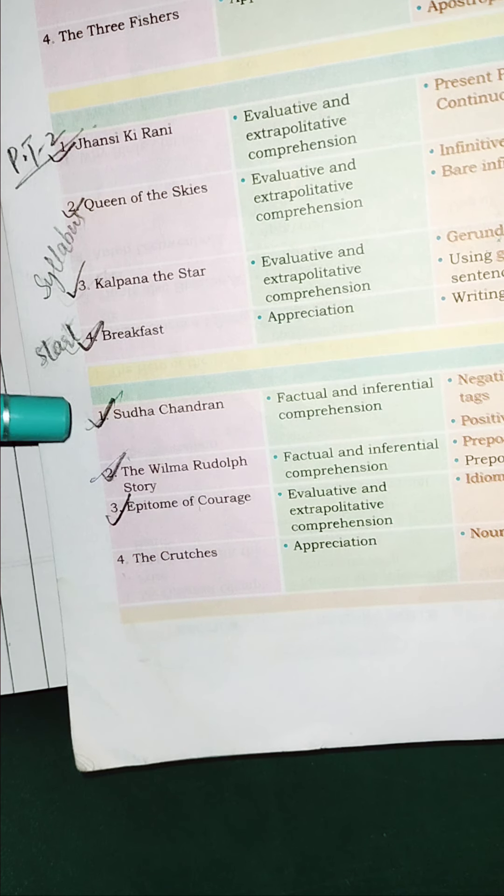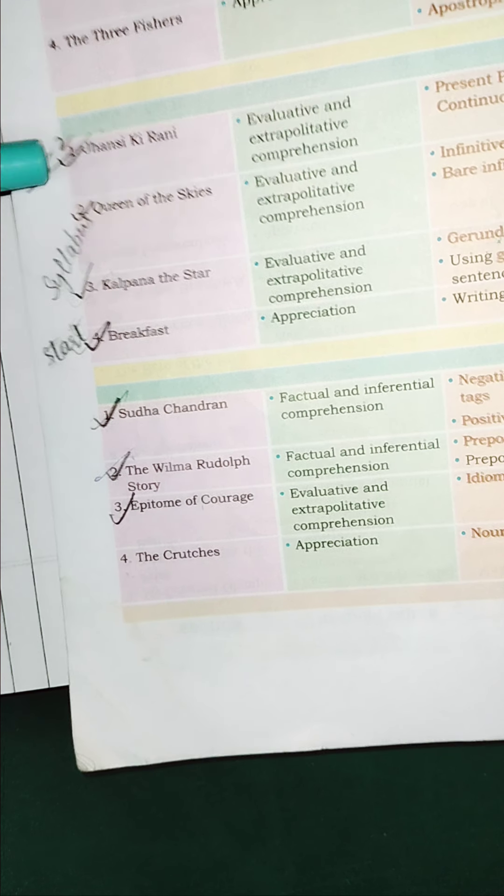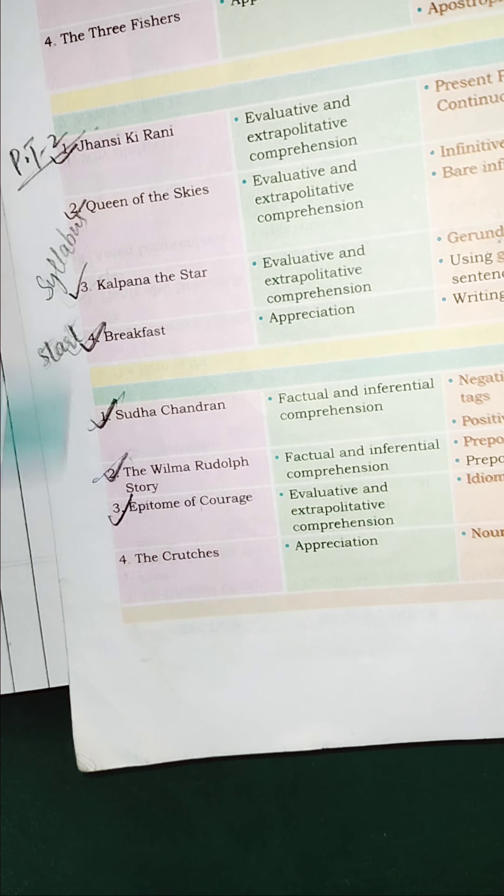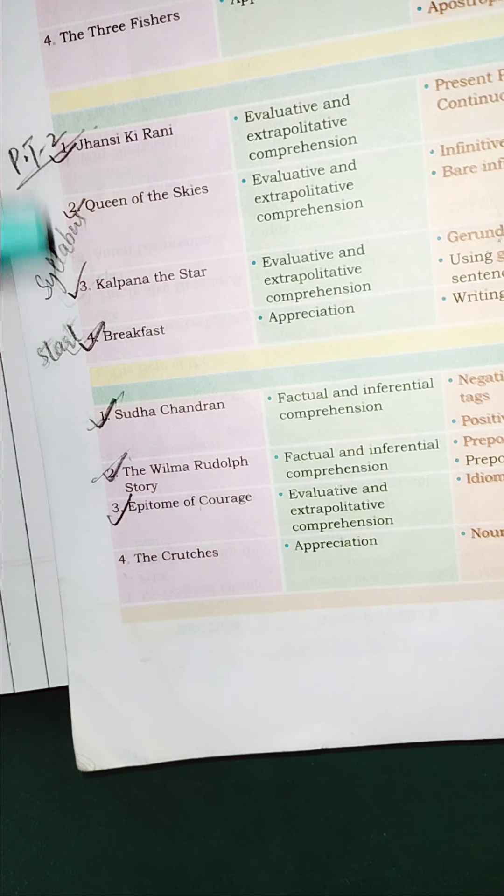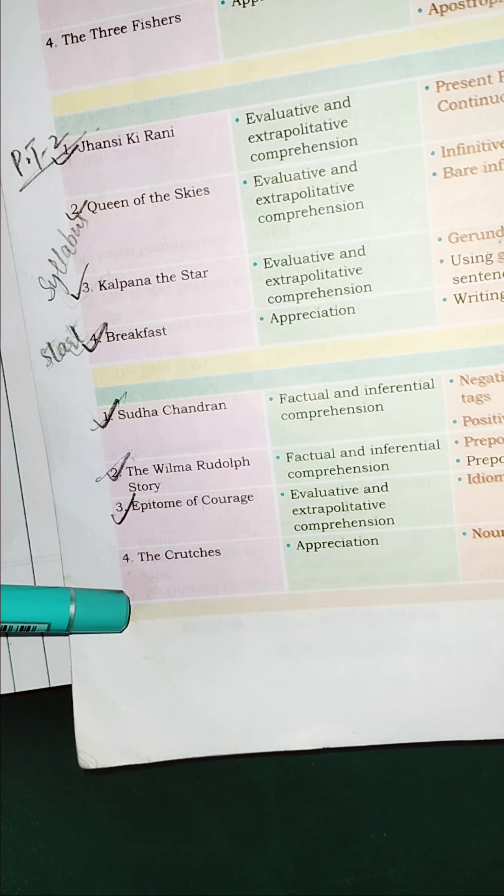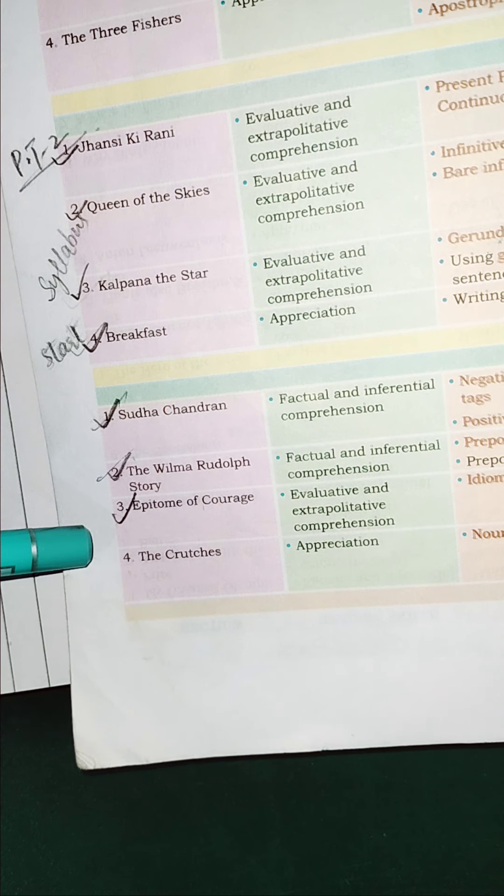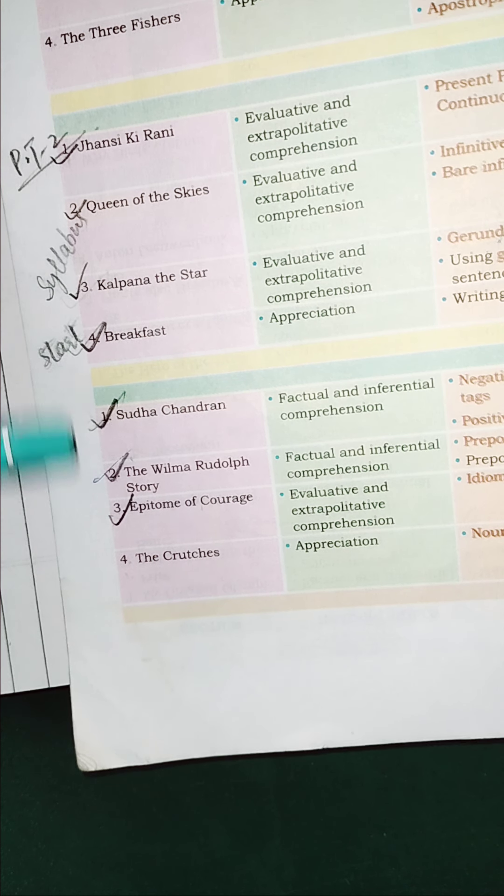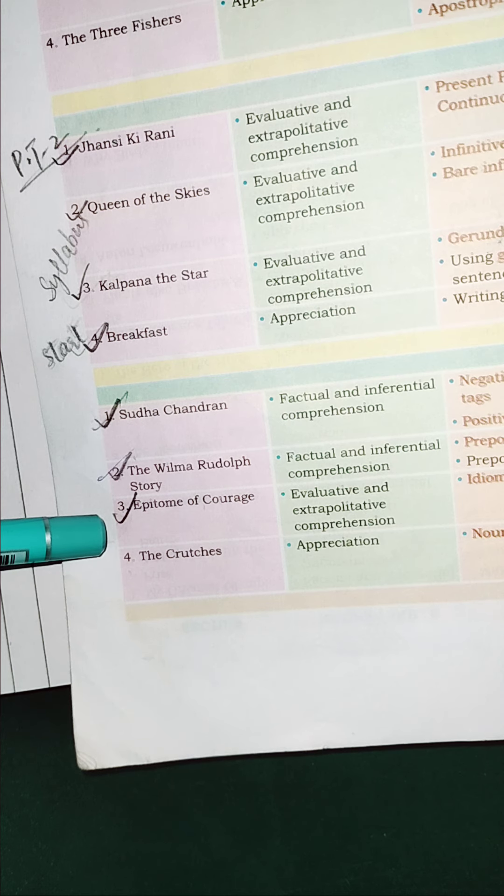So again I am telling you to finish your work till this lesson because in PT2 all these lessons are going to come from unit 2 lesson number 1 2 3 4 unit 3 1 2 3 so you will be have to learn you will be having seven lessons in your PT2 so complete these notebooks up till here next week we are going to come to your homes and going to check your notebooks.